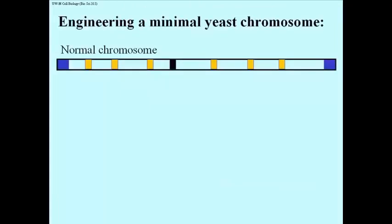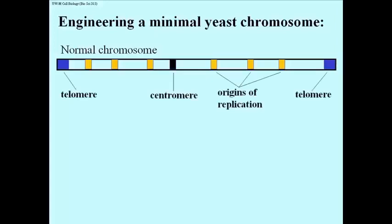Here's a description in brief of a really fun experiment, engineering a minimal yeast chromosome. Here we have cartooned one of a yeast cell's normal chromosomes, showing several components. I've used a kind of orange color to be the origins of replication. The ends are the telomeres — I've colored them blue. And in the middle, I've made a centromere in black. You may recall that telomeres are in fact specific sequences found only at the ends of chromosomes, enabling them to replicate properly. We will cover these features in more detail when we discuss replication.